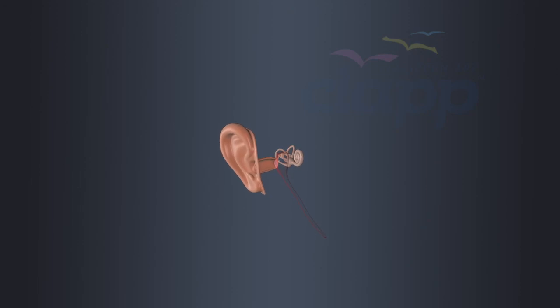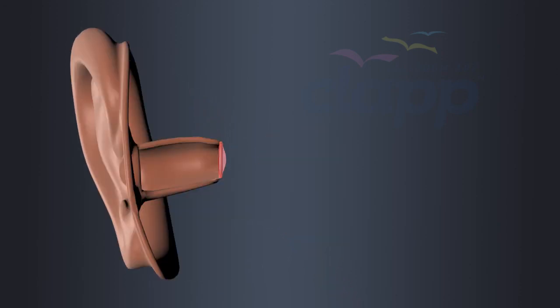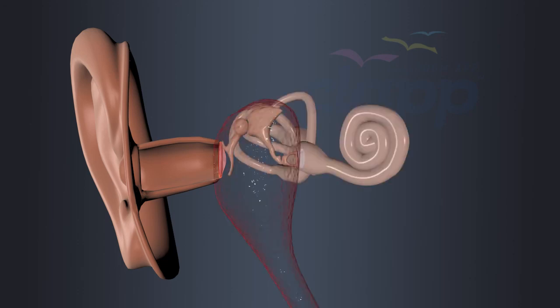We can explore the incredible features of human ear and how it allows us to hear the world around us. The human ear has three main parts: the outer ear, the middle ear, and the inner ear.